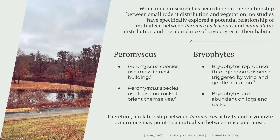I became interested in this topic during ecological fieldwork studying peromyscus species when I noticed the abundance of bryophytes in the environment. I wondered if the Peromyscus leucopus and maniculatus species had any kind of relationship with the bryophytes in their habitat. While no one has specifically researched this relationship before, there has been much research to suggest that peromyscus species use moss in their nest building, and they also use logs and rocks to orient themselves within their environment. Bryophytes tend to grow on logs, and they also reproduce through spore dispersal, which is triggered by wind or gentle agitation, such as a mouse running across a log.